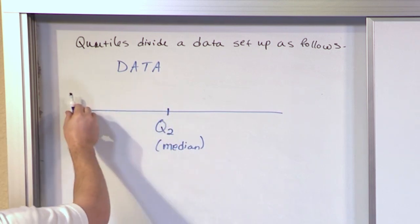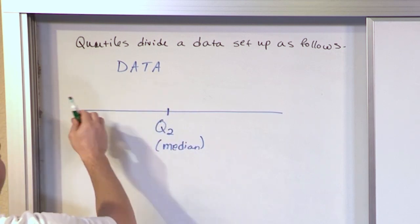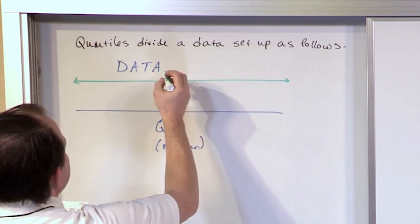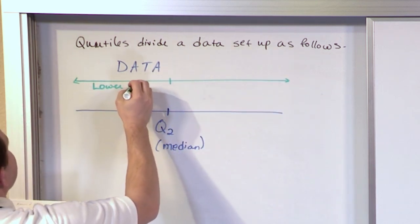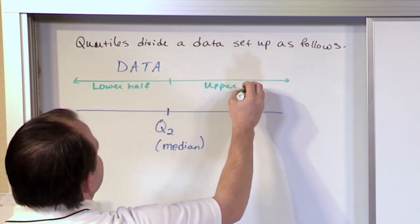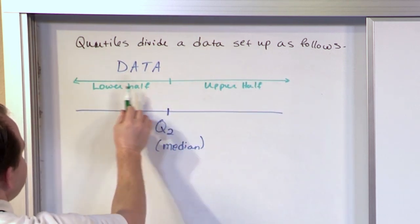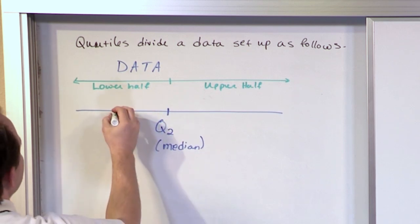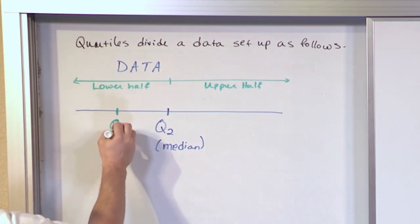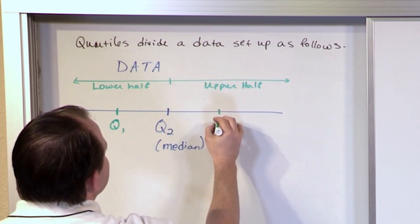Now, if you look on this side here, because the median cuts everything in half, then if you kind of were to look at your data again, this is what we call the lower half of your data set, and this is what we call the upper half of your data set. So if you look at the lower half from here to the median, or here to Q2, and if you look right in the middle there, this would be Q1. And then if you look at the upper half and find the middle right here, this would be Q3.